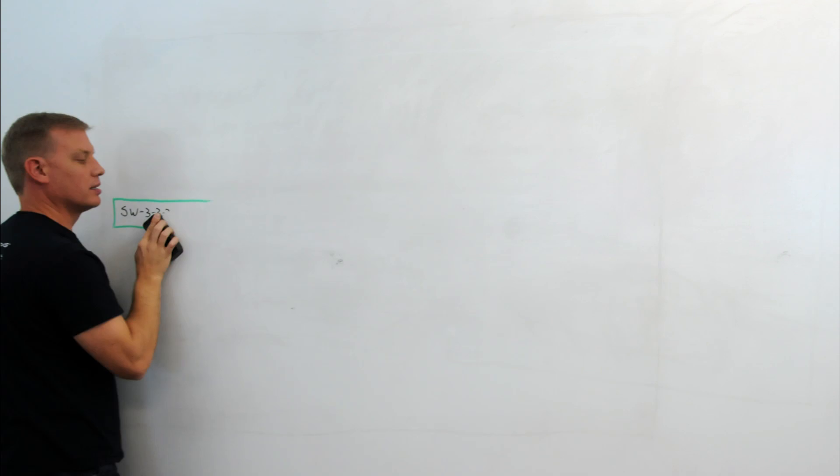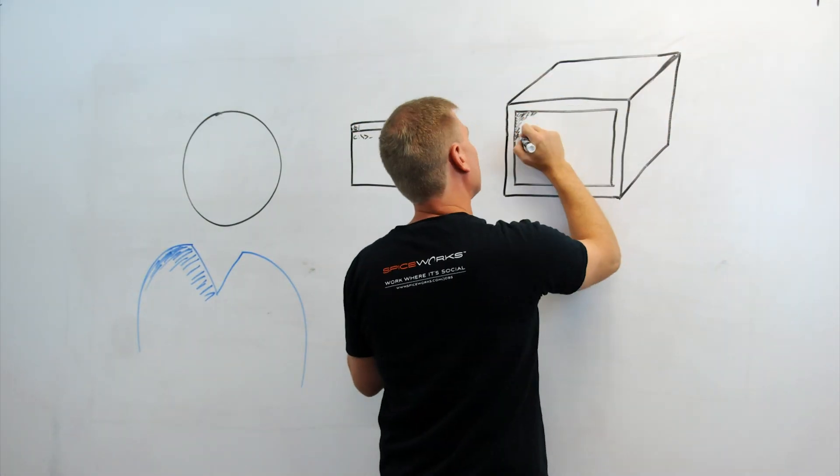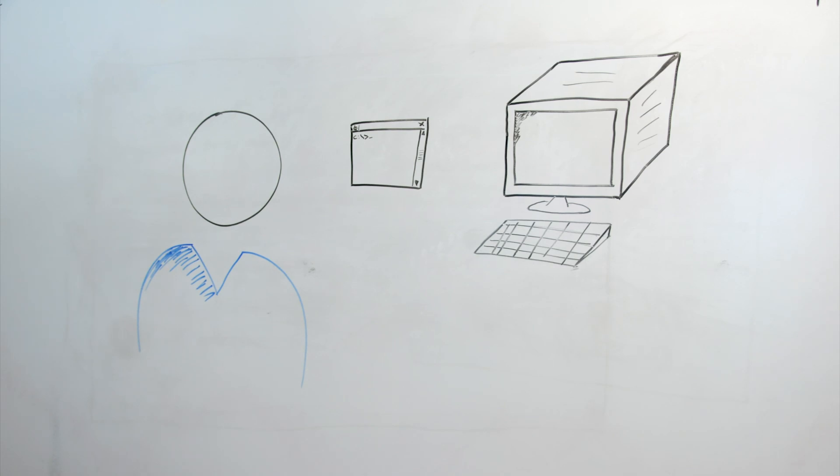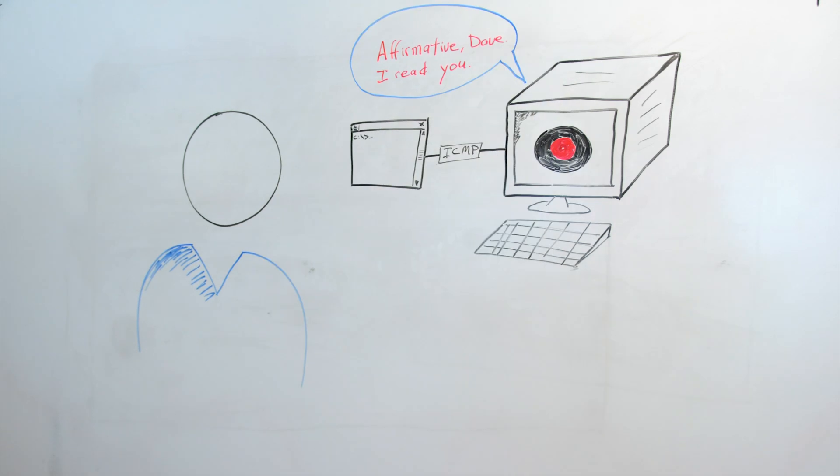So what have we learned today? First, ping and traceroute can be great ways of troubleshooting whether a device is reachable, and if not, where a connection issue might lie. We've also learned that if your friends aren't answering your calls, you can always just open a command prompt and call a computer.